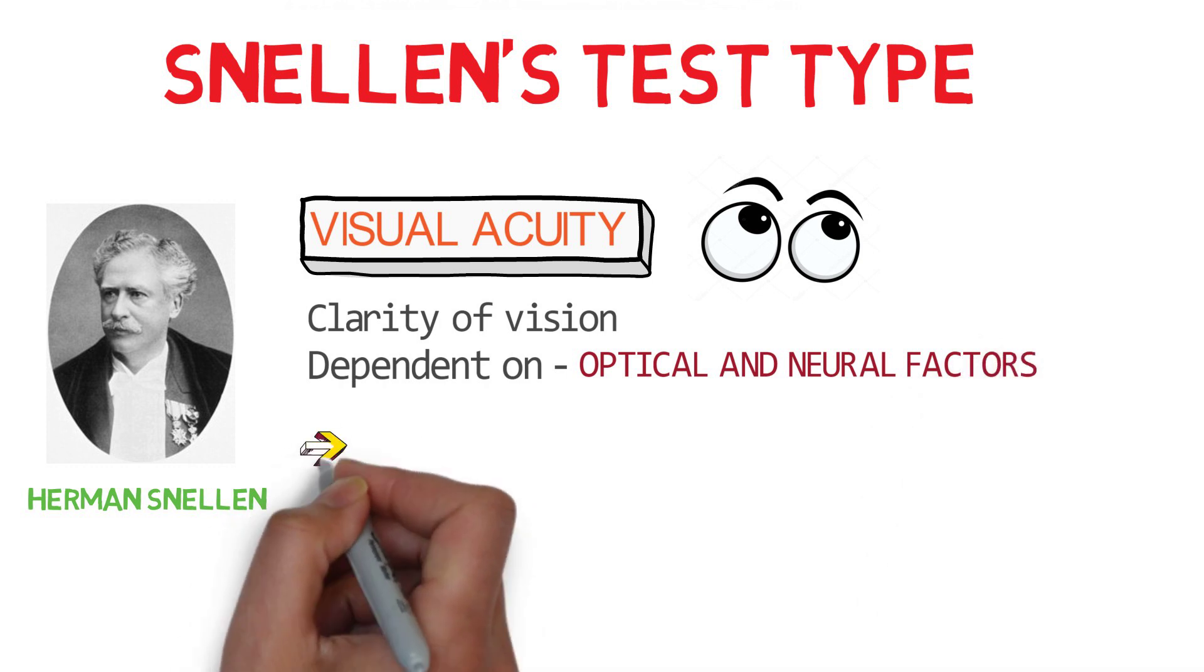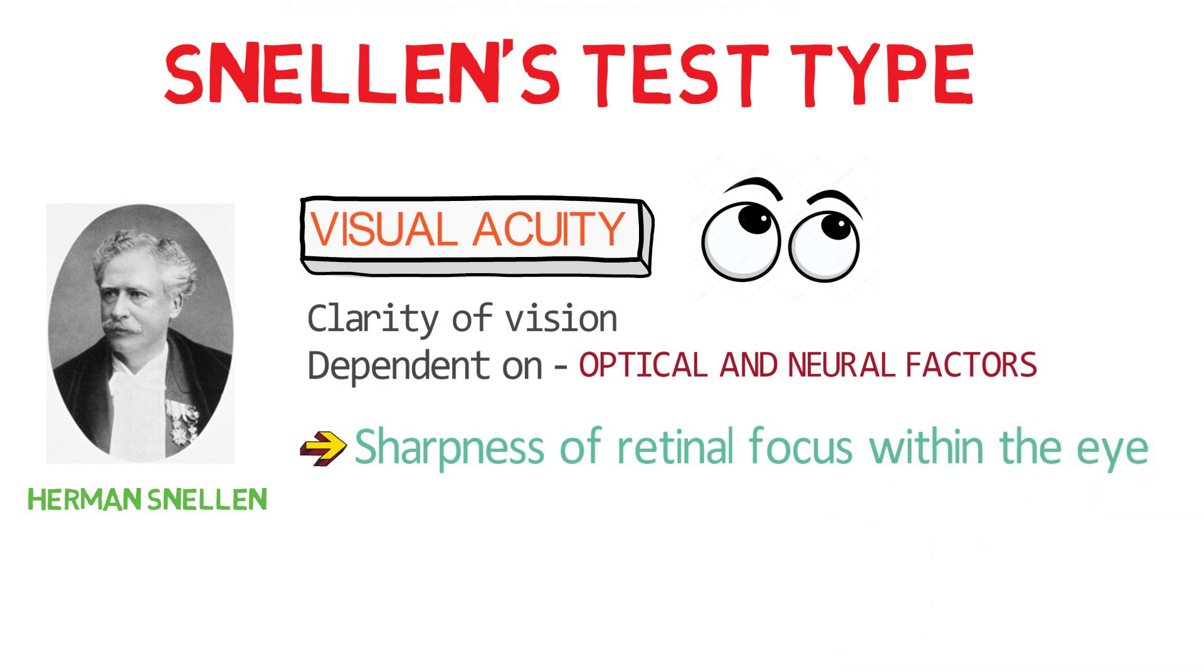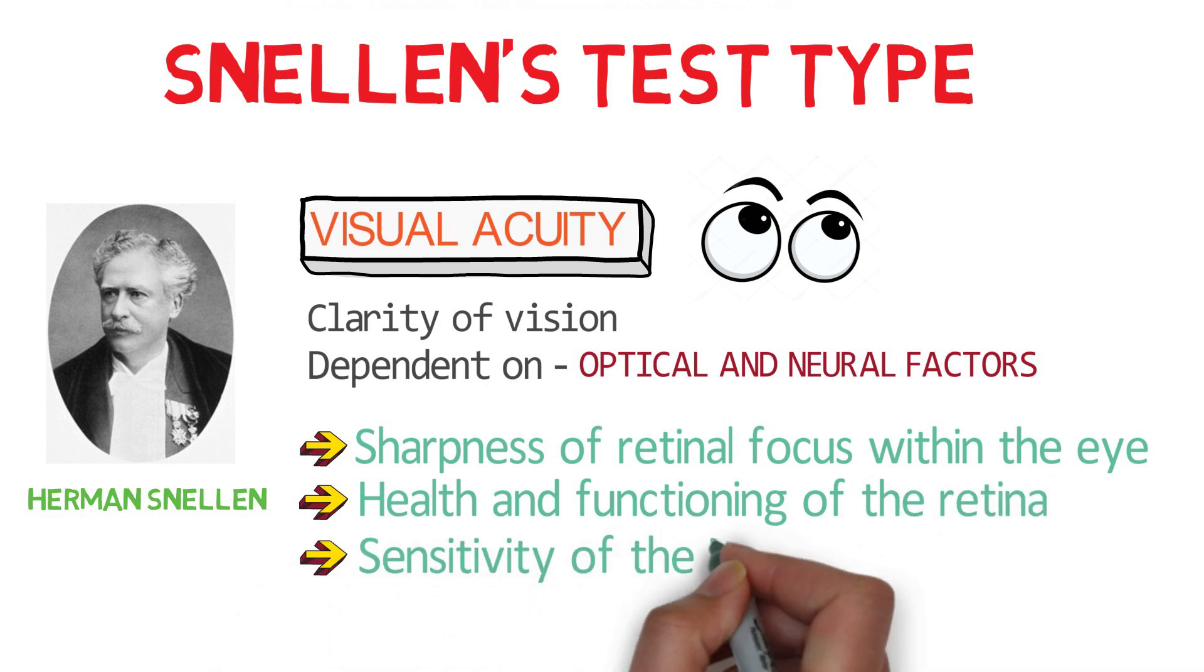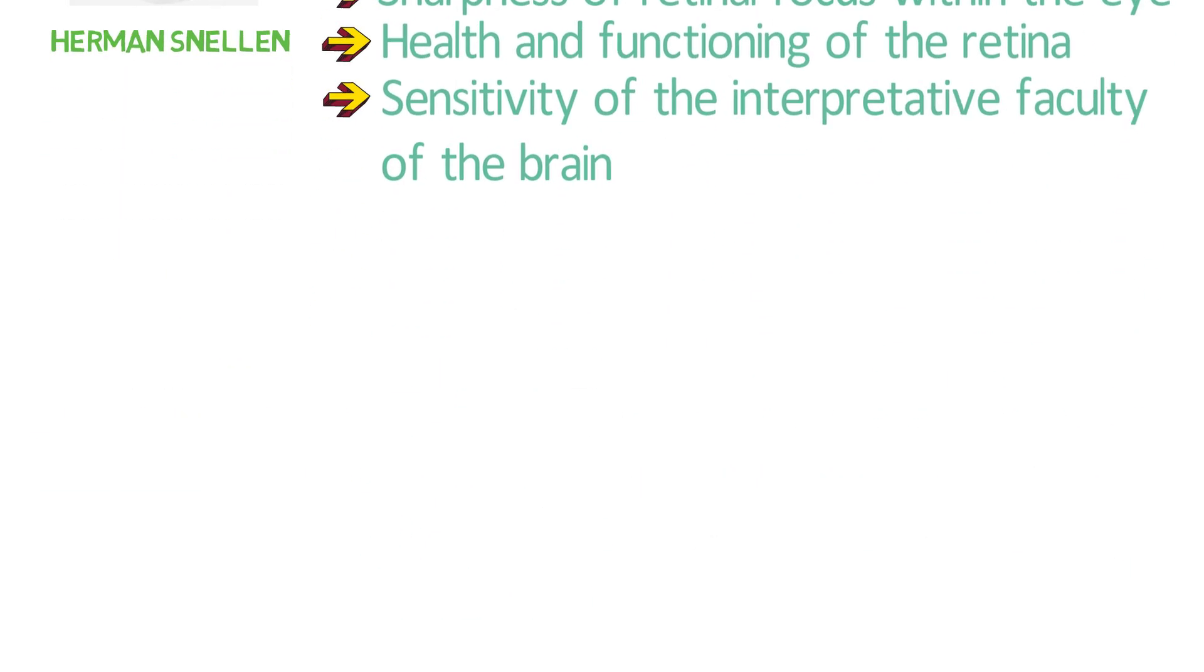1. Sharpness of retinal focus within the eye. 2. Health and functioning of the retina. 3. Sensitivity of the interpretative faculty of the brain. In simple words, visual acuity comprises all basic features of vision and therefore measurement of visual acuity by Snellen's test type gives an idea about vision of the eye.